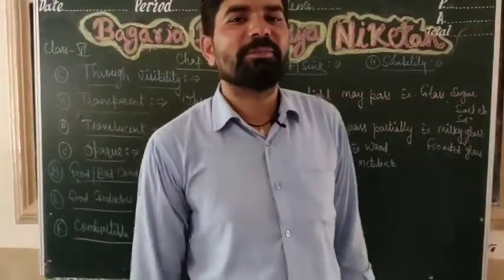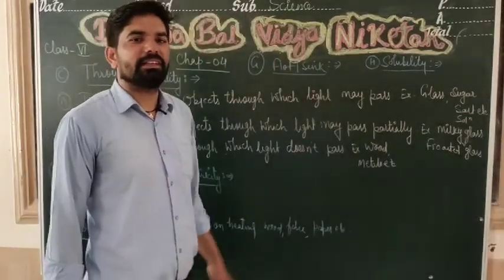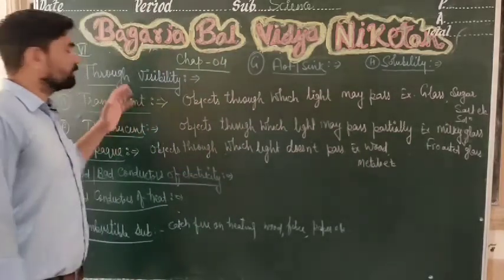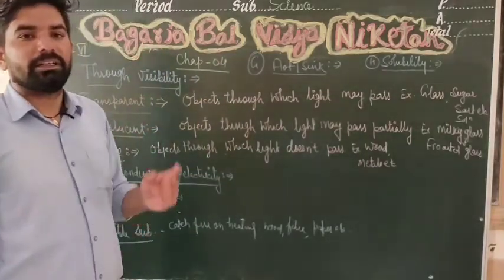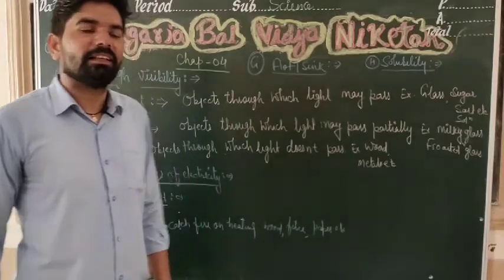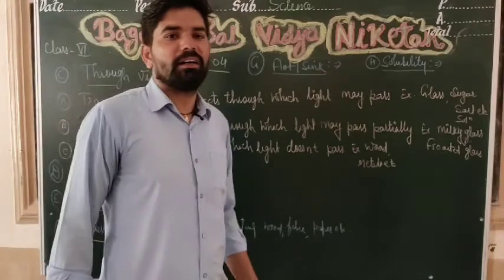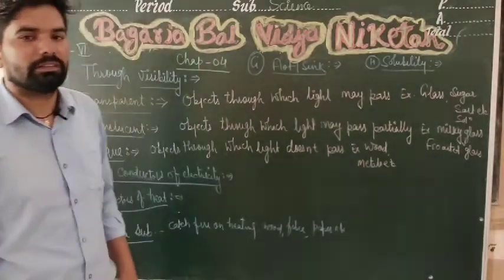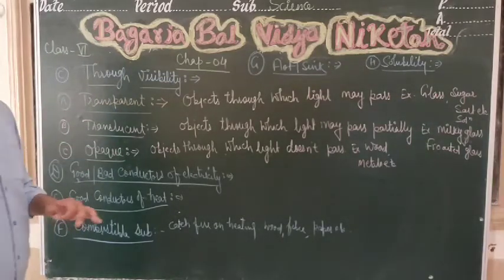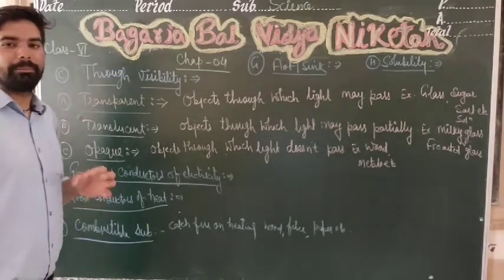Good morning friends, welcome back to online classes of Bhagadya Wal Vidya Niketan. In the previous class (Class 6), we completed the general properties of materials. We covered two properties: appearance and hardness or softness. Today's general character is inferred through visibility.